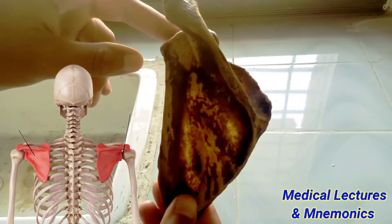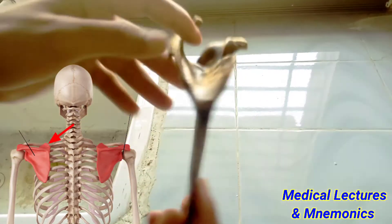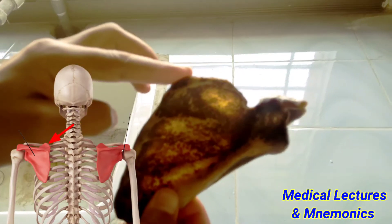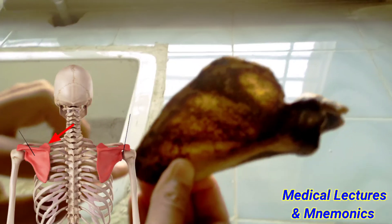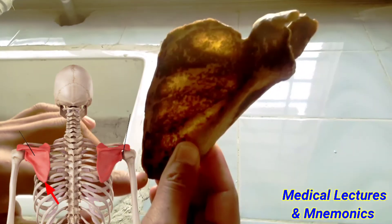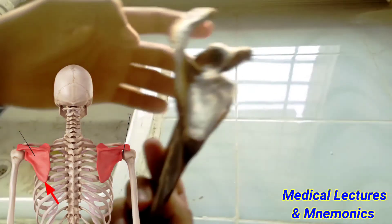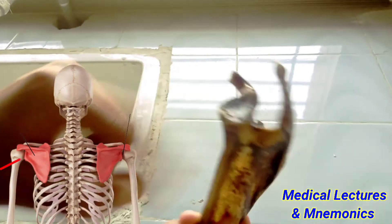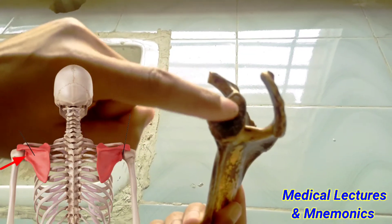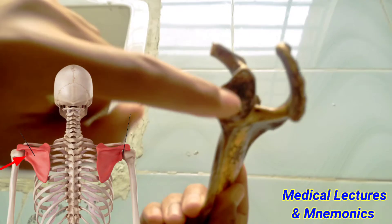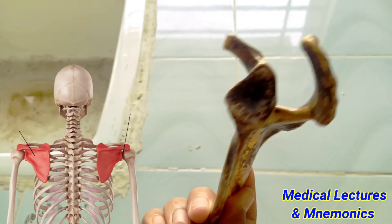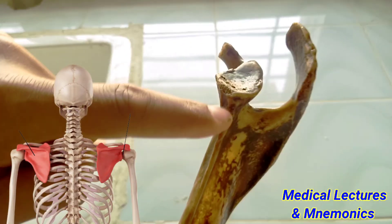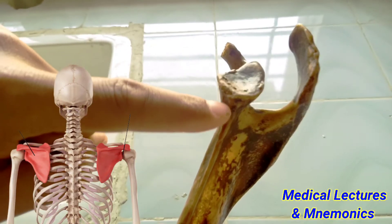One is the superior angle, as you can see here. This is called the superior angle, and this is called the inferior angle of the scapula. This is called the lateral angle. In the lateral angle there is a cavity called the glenoid cavity, and there is a tubercle here called the glenoid tubercle.